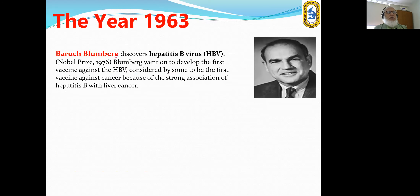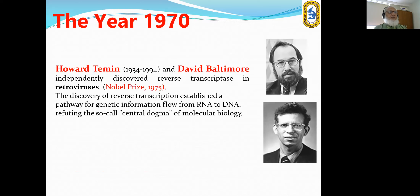Blumberg discovered hepatitis B virus and went on to develop the first vaccine against it, considered by some to be the first vaccine against cancer because of the strong association of hepatitis B with liver cancer. Howard Temin and David Baltimore independently discovered reverse transcriptase in retroviruses, receiving the Nobel Prize in 1975. The discovery of reverse transcription established a pathway of genetic information flow from RNA to DNA.